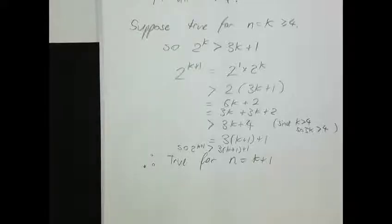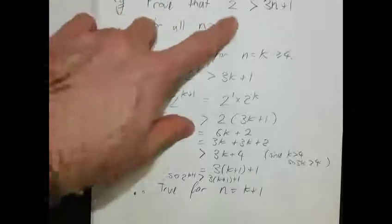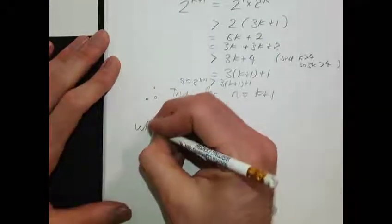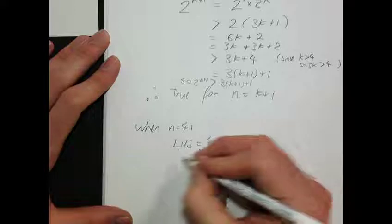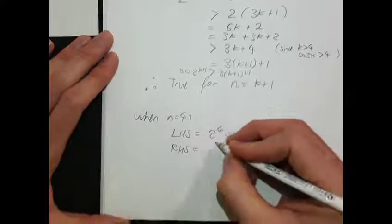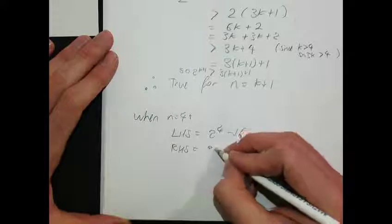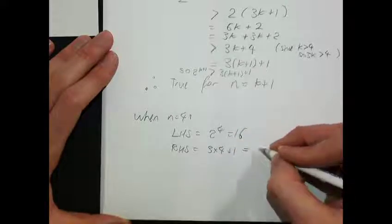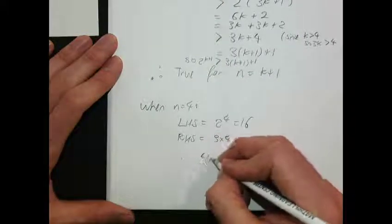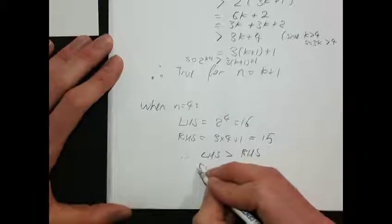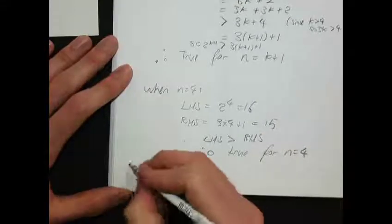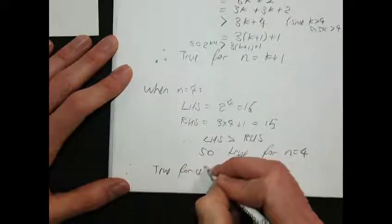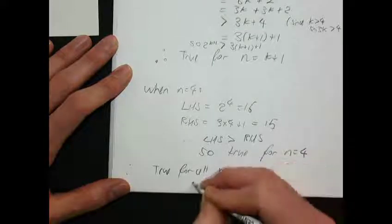Now for the base case, which is N=4. The left-hand side is 2^4 = 16, and the right-hand side is 3(4)+1 = 15. The left-hand side is indeed greater than the right-hand side, so it's true for N=4. Therefore true for all N≥4 by mathematical induction.